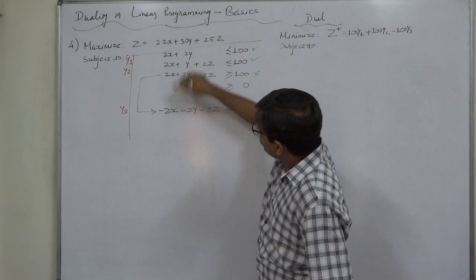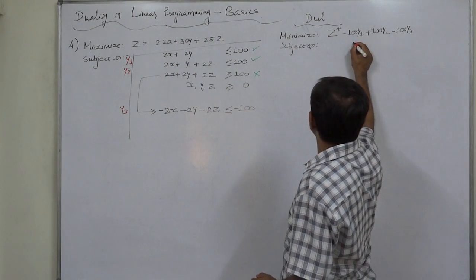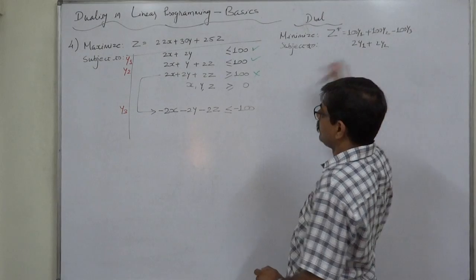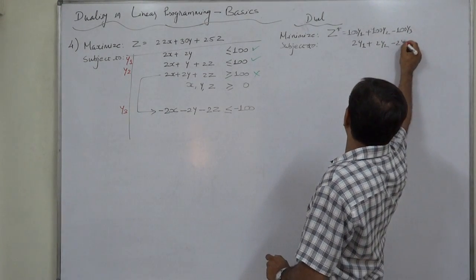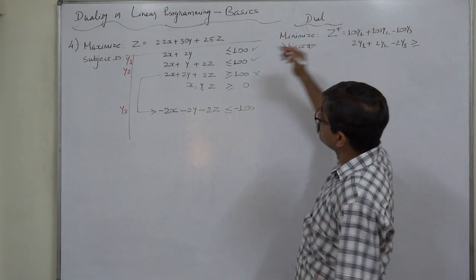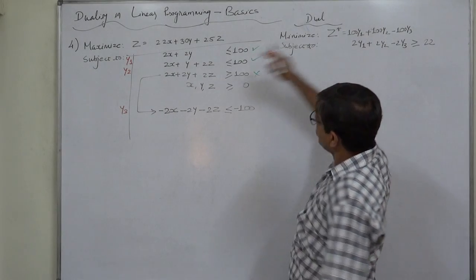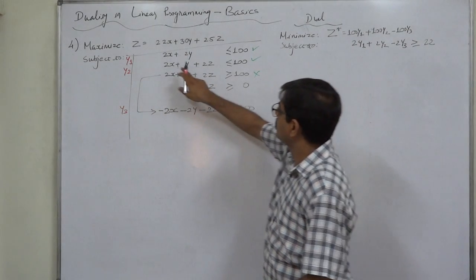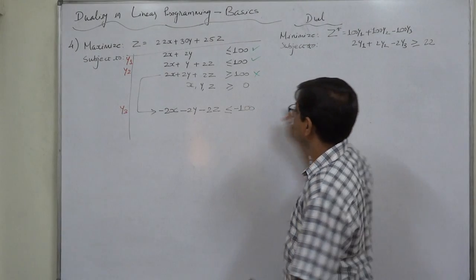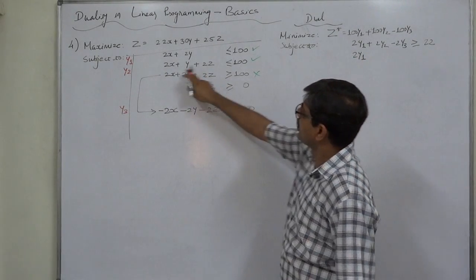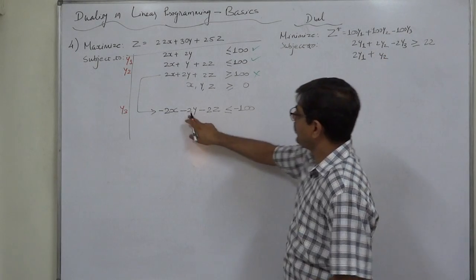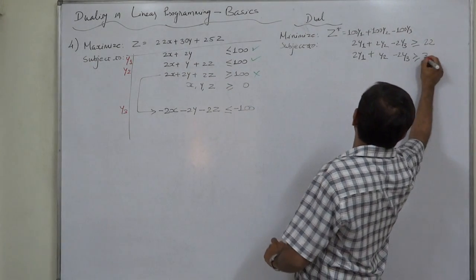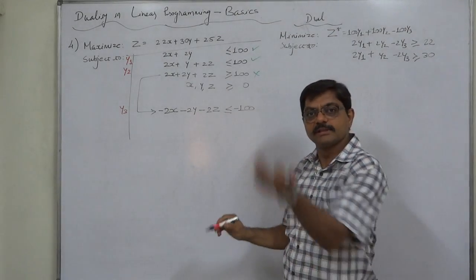The primal variable x gives us the first dual constraint: 2y₁ plus 2y₂ minus 2y₃ greater than or equal to 22. Similarly, the primal variable y gives us the second dual constraint: 2y₁ plus y₂ minus 2y₃ greater than or equal to 30.